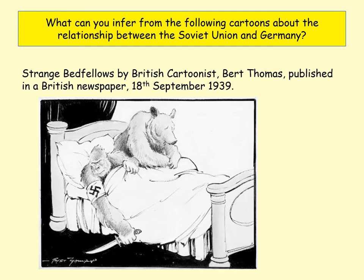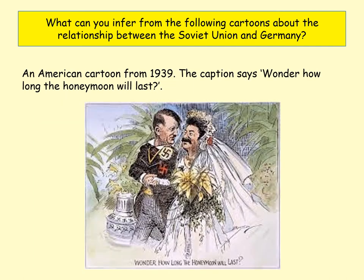Here are some more cartoons for you to look at. Again, the notion that Germany and the Soviet Union were not natural allies comes across clearly. The Soviet Union is often characterised by a bear, its big size being a metaphor for the fact that it is a very large country. Another cartoon shows them getting married, with the key question being 'wonder how long the honeymoon will last?' Most people at the time suspected this pact would be quite time-limited, and that it was inevitable Germany and the Soviet Union would one day go to war.